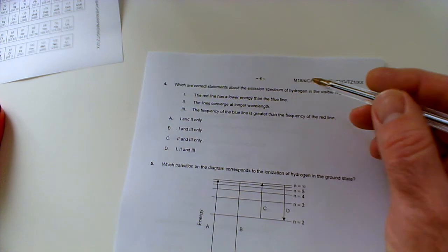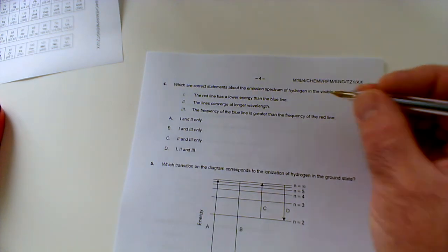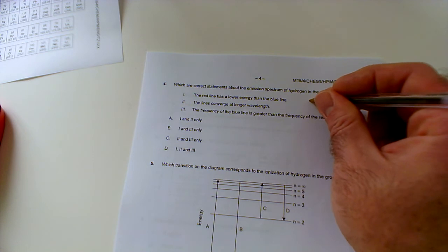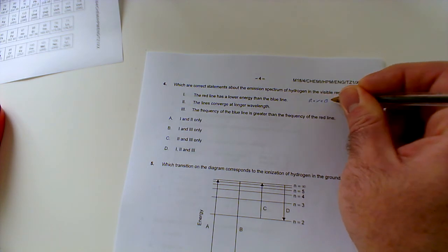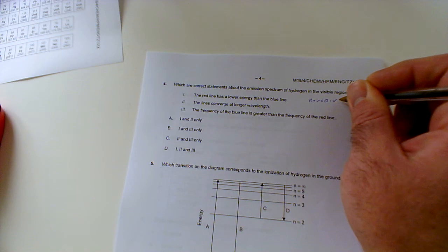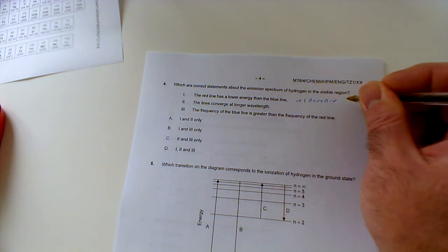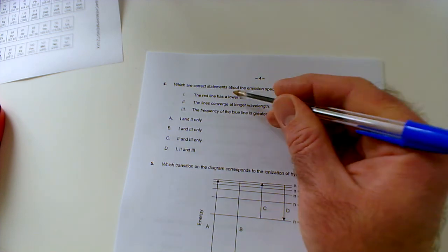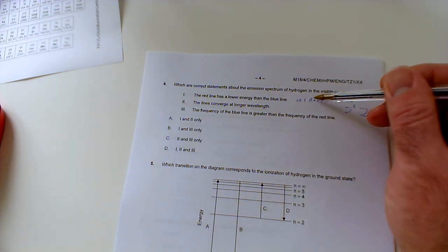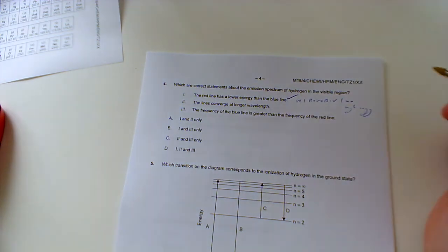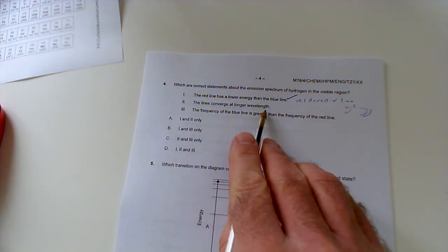Number four: which are correct statements about the emission spectrum of hydrogen in the visible region? The red line has a lower energy than the blue line. If we remember ROYGBIV, that's your visible region—red, orange, yellow, green, blue, indigo, violet. And of course we've got infrared which is lower energy here, and ultraviolet which is higher energy. So this is your high energy end. The red line has a lower energy than the blue line—well yes, red is lower energy than blue, so that's correct.